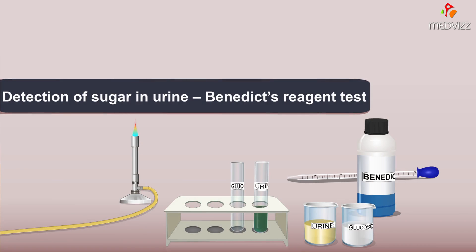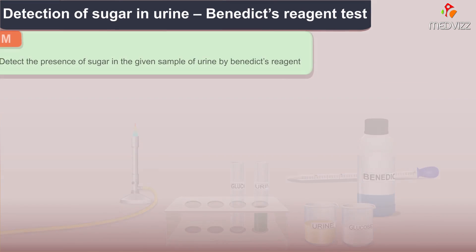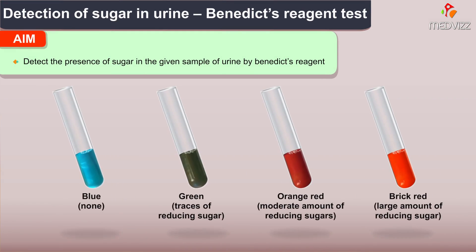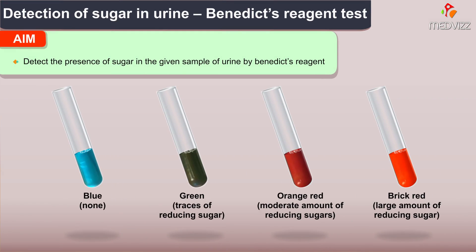Hey everyone, welcome to another video. In this section of the biochemistry, we'll discuss an important biochemical test in the detection of sugars in the urine, which is Benedict's reagent test. The aim is to detect the presence of sugars in the given sample of urine using the Benedict's reagent.